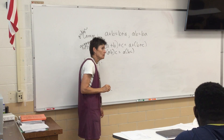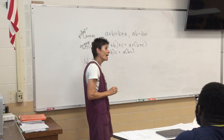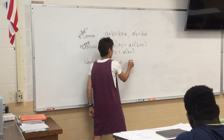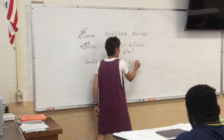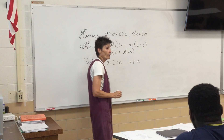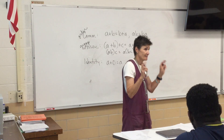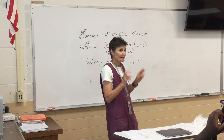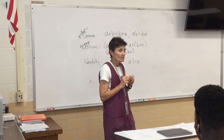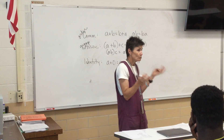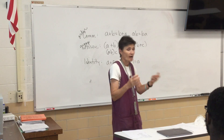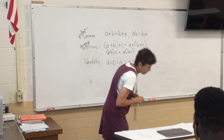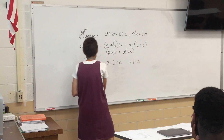What about identity? That has to do with zero — if you're adding, a plus zero is a. Or a times one is a. What it means to be an identity is: do it and you get the identical result. If you add zero, you get the identical thing back. If you multiply by one, you get the identical thing back.